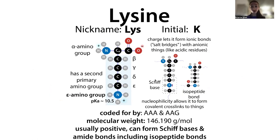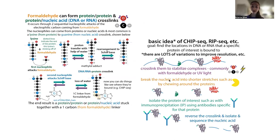Lysine can also form a Schiff base — a double bond between a nitrogen and a carbon. What's cool is that it's swappable; you can swap it out for other Schiff bases. This comes into play in metabolism when breaking down amino acids, passing the amino group from one thing to another to safely avoid toxic nitrogen buildup. In the lab, crosslinking with formaldehyde or other agents can be used for techniques like ChIP-seq to link a protein to DNA or RNA.